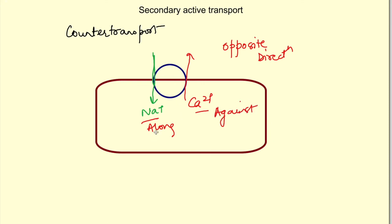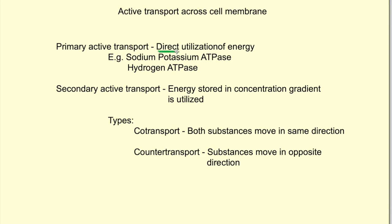In summary: primary active transport directly utilizes ATP to transport one or more substances against their concentration gradient. Secondary active transport utilizes energy indirectly — one substance is transported along its concentration gradient while another is transported against it. Based on direction, secondary active transport is of two types: co-transport, example being SGLT, and counter transport, example being the sodium-calcium exchanger. That covers the fundamentals of active transport.